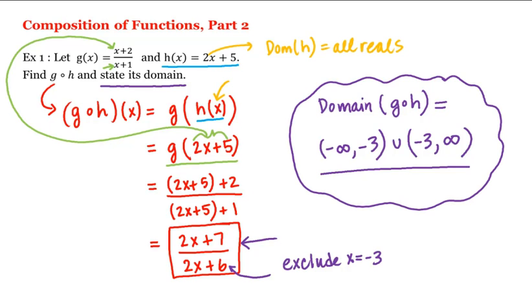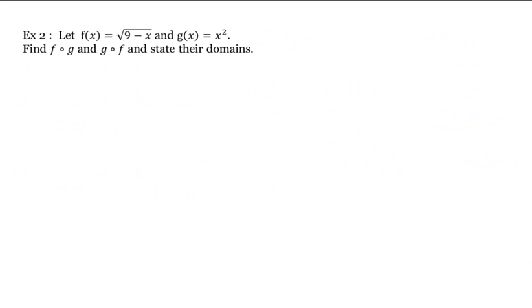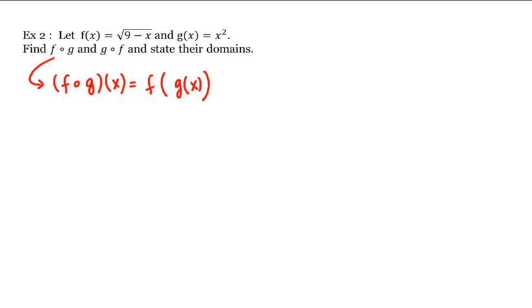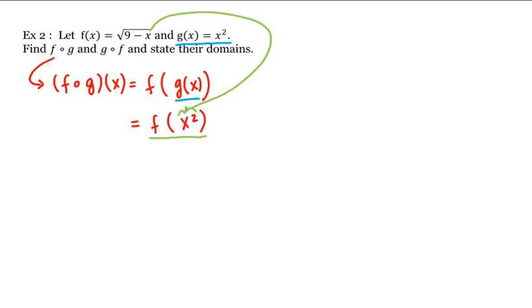Let's look at another example. Let f of x equal the square root of 9 minus x, and g of x equal x squared. Let's find the composition in both directions — f composed with g and g composed with f — and state their domains. Starting with f composed with g: by definition this is f of g of x. But g of x is x squared, and f of any input means we plug that input in where we see x. So this equals the square root of 9 minus x squared.